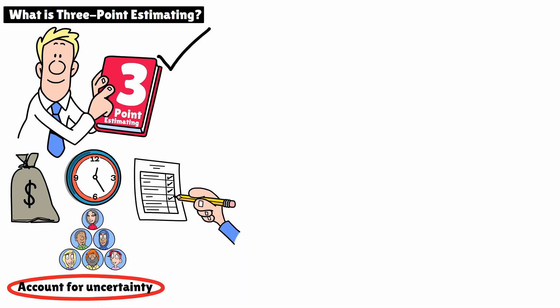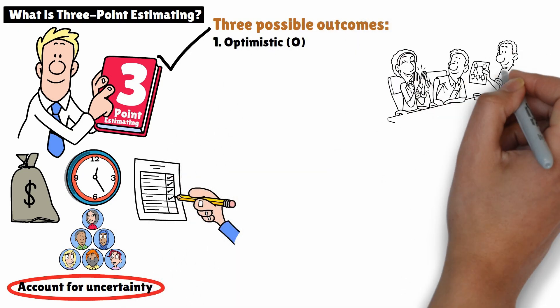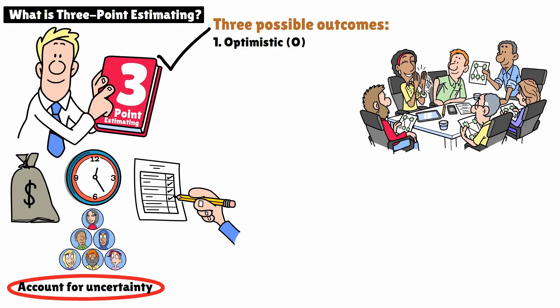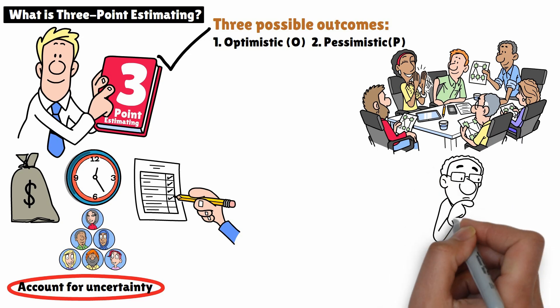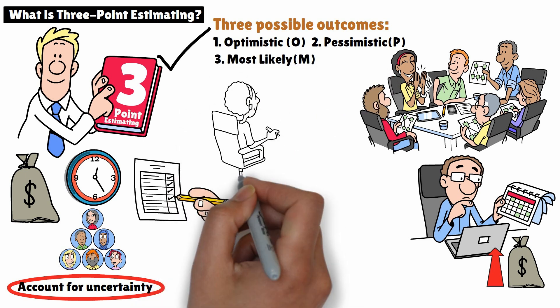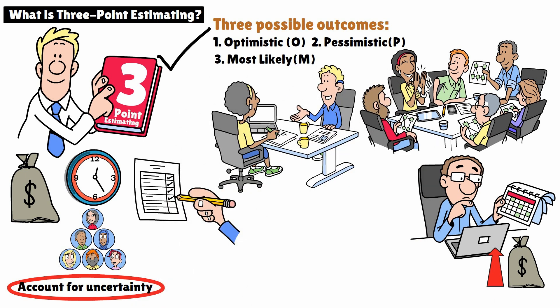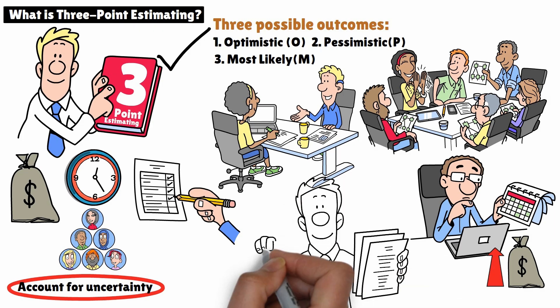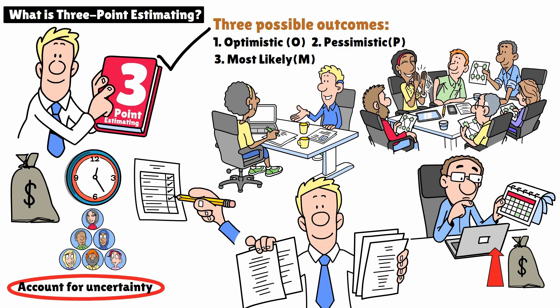At its core, three-point estimating provides more realistic estimates by accounting for three possible outcomes. One: optimistic — the best case scenario where everything goes smoothly without any delays or issues. Two: pessimistic — the worst case scenario where significant challenges arise, causing delays or increased costs. Three: most likely — the scenario that's most probable, assuming normal conditions with minor variations. By considering these three possibilities, you develop a more complete picture of what could happen, which helps in managing uncertainty and preparing more accurate estimates.